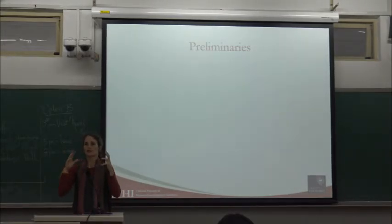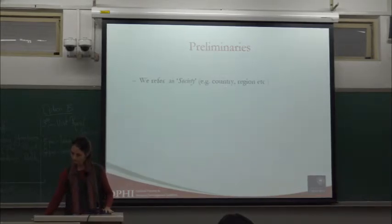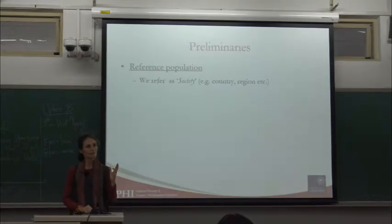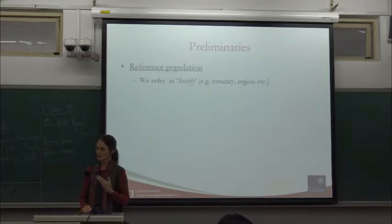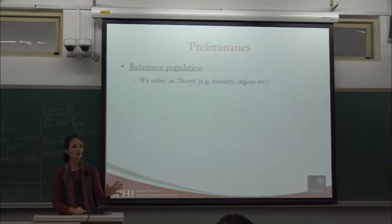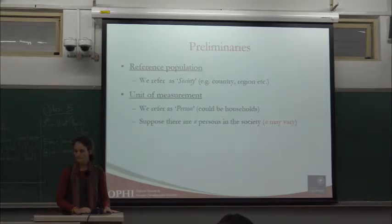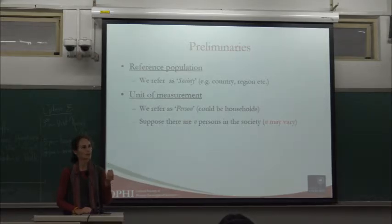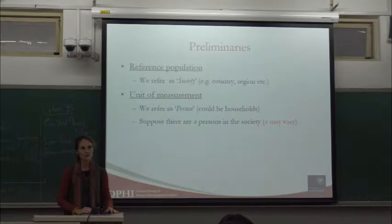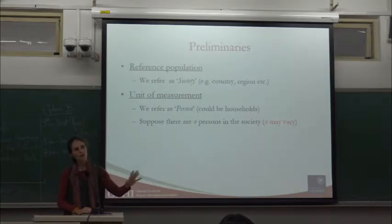Let me put some notation on the table so we're all on the same page. When talking about a reference population, we're talking about a society — a country or a region — all of the people in that population. At the moment of identification, I'll speak about a person, though many income consumption surveys use the household as the unit. We'll talk about n persons in society, where n is just the number of persons.